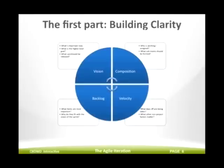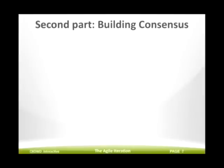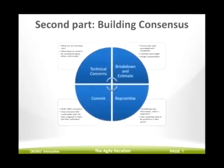The second part of the Agile Iteration Planner meeting is about building commitment — you want people aligned and moving quickly. The first piece is airing technical concerns. This is about the team foreseeing, based on their past experiences, potential roadblocks, complexities, and underlying architecture changes associated with the tasks they're taking on. Once the team has discussed those technical concerns, they move into breaking down and estimating the tasks — breaking them into actionable tasks that can be estimated, assigning time estimates, and then assigning ownership.